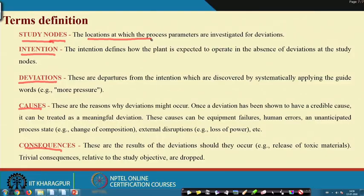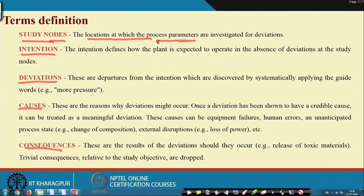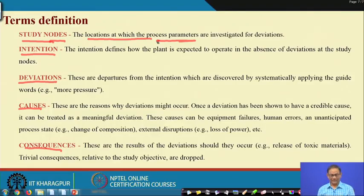For example, if we talk about the pressure tank system and we are interested to know the deviation in terms of pressure inside the tank, then the tank itself could be a study node, and the process parameter of interest is the pressure. If you think of the pump, then pump overrun is one deviation, and the time of running - too long or too short - is the parameter. Similarly, if you think of a chemical reaction, the reactor will be the location at which you conduct the HAZOP study and find out the deviations.